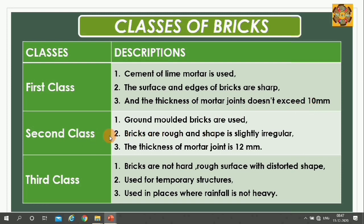In second class bricks, ground molded bricks are used. Bricks are rough and slightly irregular in shape. The thickness of mortar joints is 12 mm. In third class bricks, bricks are not hard, rough in surface with disordered shape. They are used for temporary structures and in places where rainfall is not heavy.